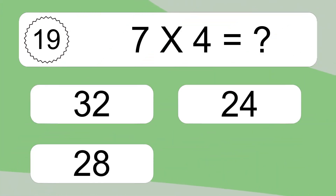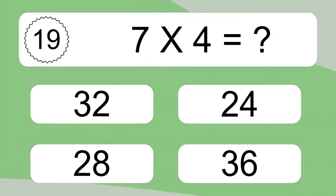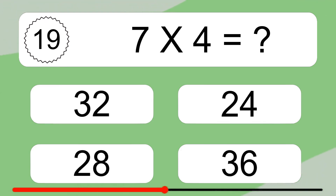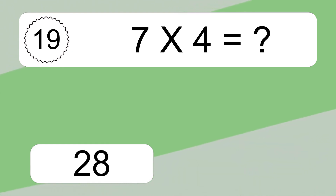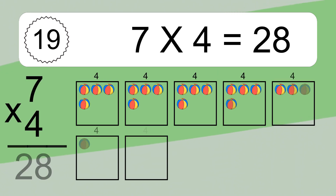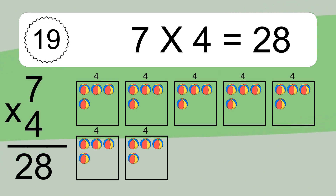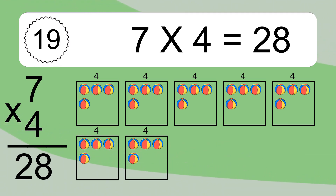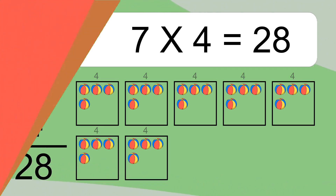7 times 4 equals what? 7 times 4 equals 28. We have 7 boxes, and each box has 4 colorful balls inside. If you count all the balls in all the boxes together, you will have 7 times 4 balls. This equals 28 balls.